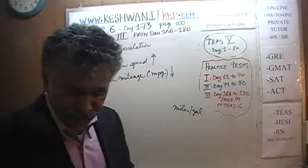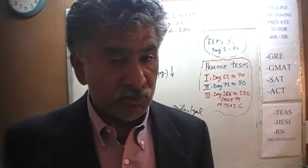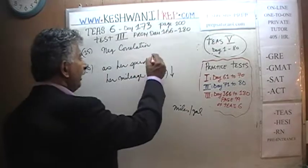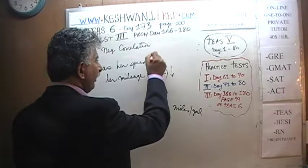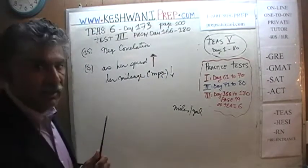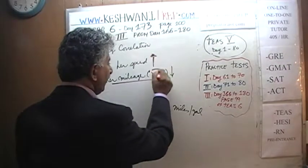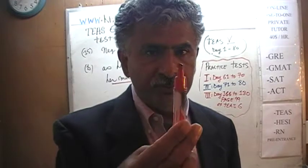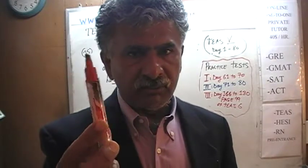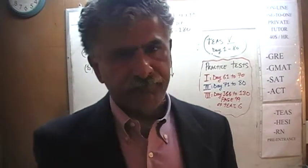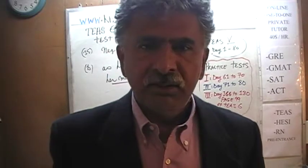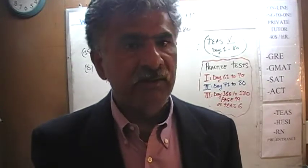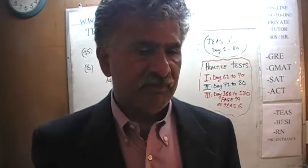Apparently this lady has a gauge in her car that shows her mileage per gallon at any given second, in addition to her speedometer. What she noticed is that as the needle moves up in speed — the faster she goes — the efficiency of the car goes down; the car gives fewer and fewer miles per gallon. And that is true: if you drive at a very fast speed, mileage per gallon goes down drastically, especially approaching 70 or 80 miles an hour — you don't get the same mileage as at around 40 or 50 miles an hour.